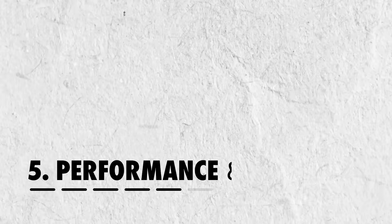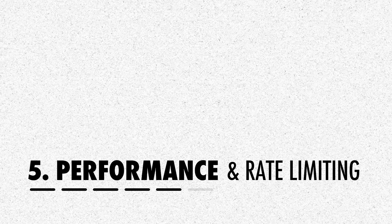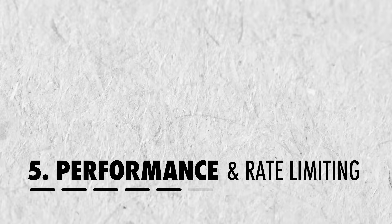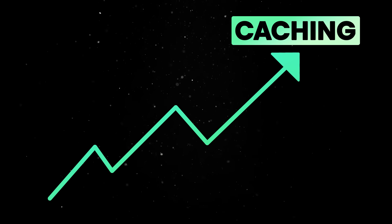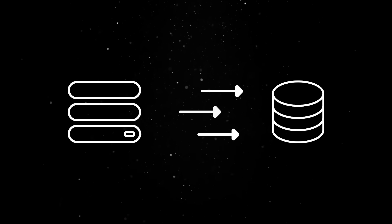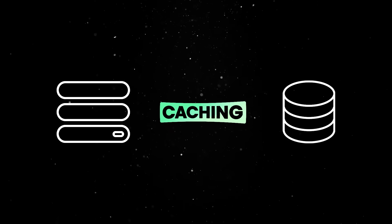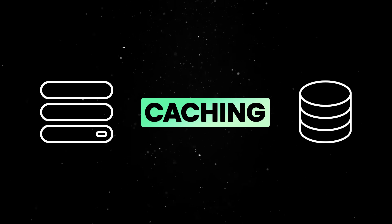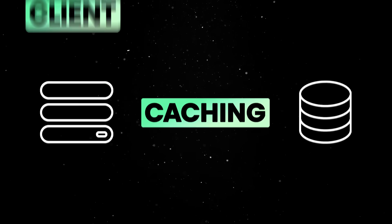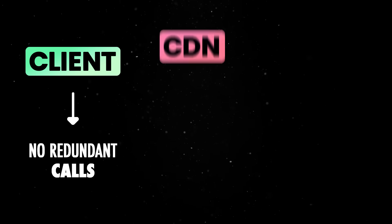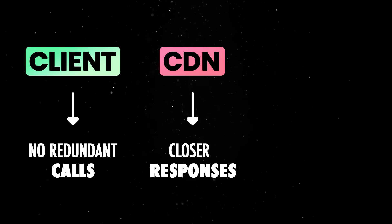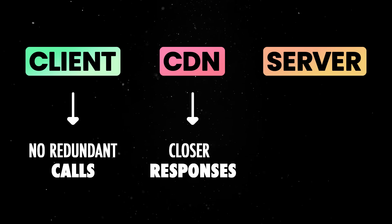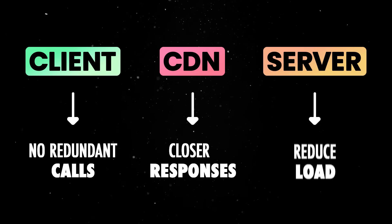Your API is practically useless if it does not scale under load. One of the easiest ways to improve API performance is caching. Instead of hitting the database for every request, frequently requested data can be stored and reused. This can happen at three levels: on the client side, to prevent redundant calls; at the CDN level, to cache responses closer to the user; or on the server, where the API itself caches database queries to reduce load.